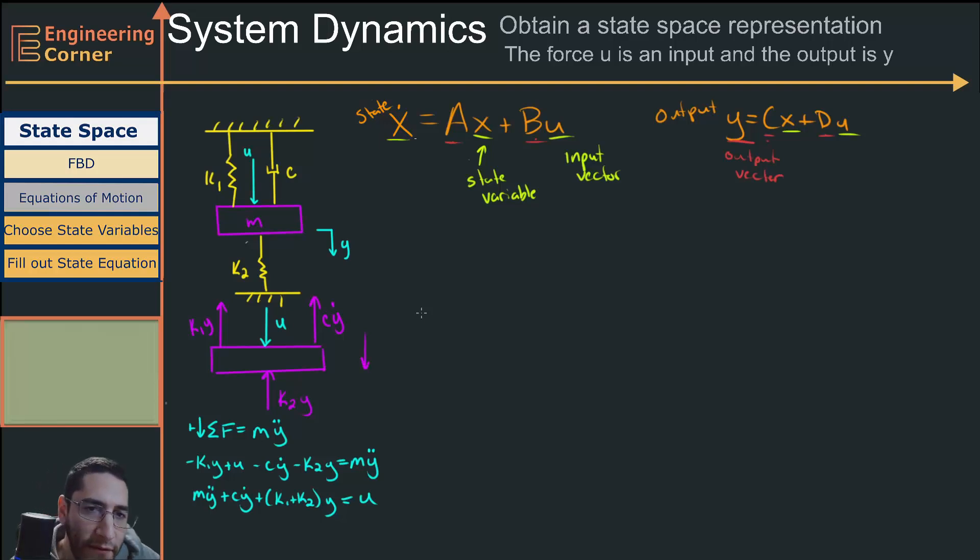So we have to now fill out these matrices. When we're choosing our state variables, we look at our equation and we have a second order differential equation, so we're going to need two state variables. I'm going to start with x1, and we're in terms of y right here, so x1 is going to equal y.